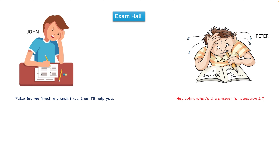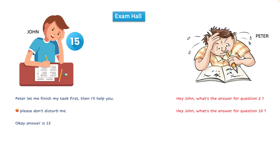After a few seconds, Peter again asked John: can you answer me question number 10? John was quite angry because of the exam pressure and told Peter not to disturb him. Then, being kind, John said the answer is 15. But Peter misunderstood it as 50 and wrote it down, not even knowing which question it was for. Peter acknowledged saying thank you. After a few days, the result came and Peter's parents were very unhappy.